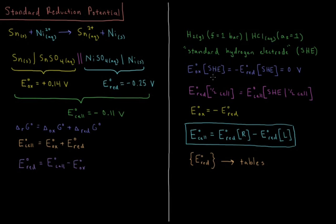Conveniently, the standard oxidation potential of the hydrogen electrode is equal to the negative of its standard reduction potential, which is defined to be zero volts. The standard hydrogen electrode with this gas concentration and ionic activity of HCl is defined to be zero, which gives us the ability to compute the standard reduction potentials of other half cells.